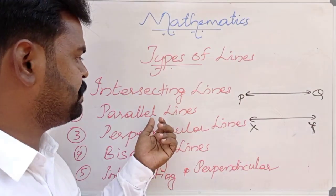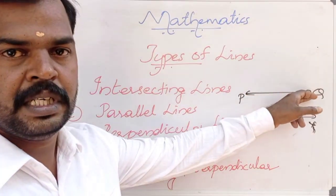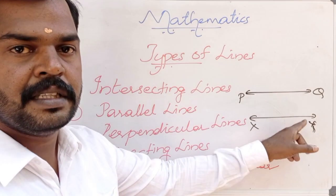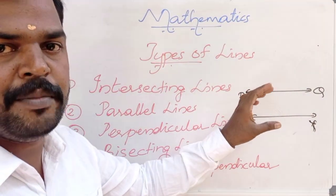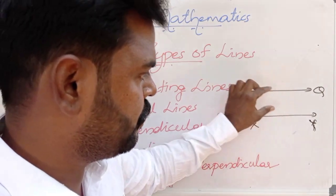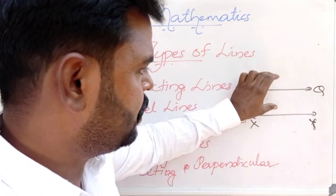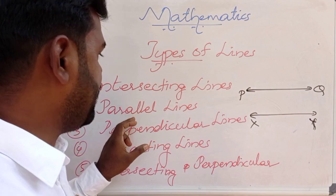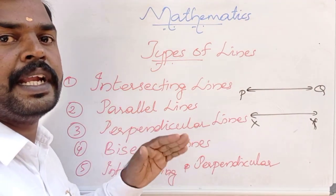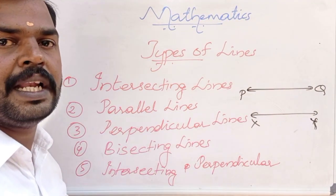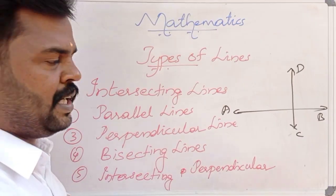Now let us discuss parallel lines. Line PQ and line XY — these two lines will not intersect, they will not touch. They go on with the same distance between them. So these two lines are called parallel lines. Parallel lines are lines that do not intersect. An example of parallel lines is railway lines.